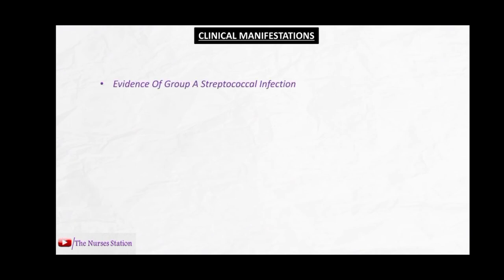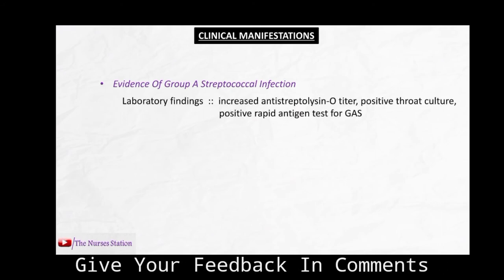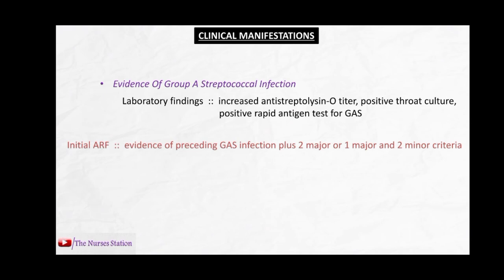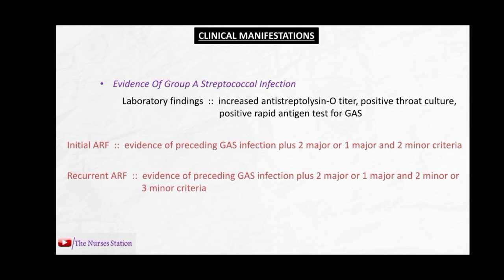Laboratory findings to confirm group A streptococcal infection include increased anti-streptolysin O (ASO) titer, positive throat culture, and positive rapid antigen test for group A streptococcus. For initial acute rheumatic fever, diagnosis requires confirmed evidence of preceding group A streptococcal infection plus two major criteria, or one major and two minor criteria. For recurrent acute rheumatic fever, we need evidence of preceding group A streptococcal infection plus two major, or one major and two minor, or three minor criteria.